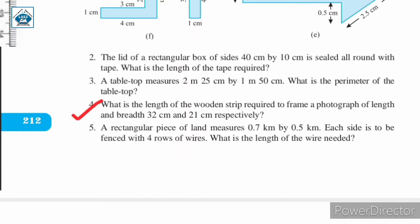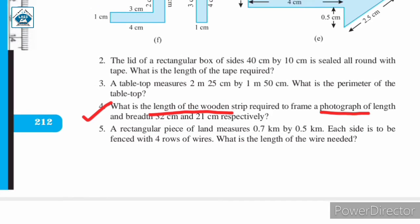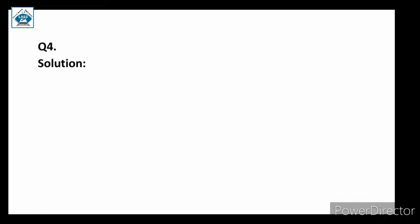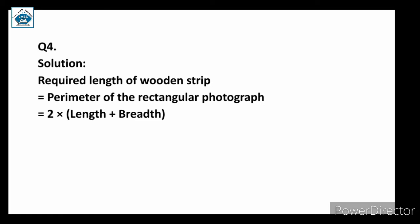Question number four: what is the length of the wooden strip required to frame a photograph of length and breadth 32 centimeter and 21 centimeter respectively? We are asked the length of the wooden strip required to make a photo frame. The required length of the wooden strip is equal to the perimeter of the rectangular photograph.